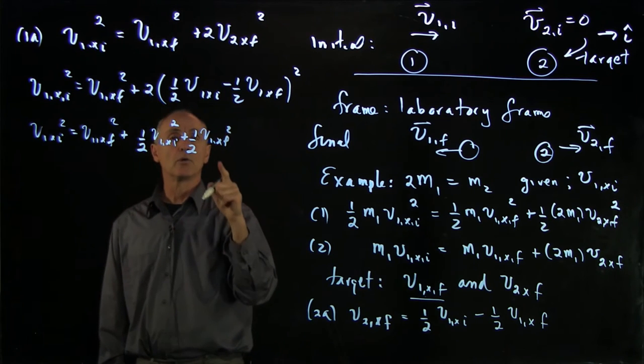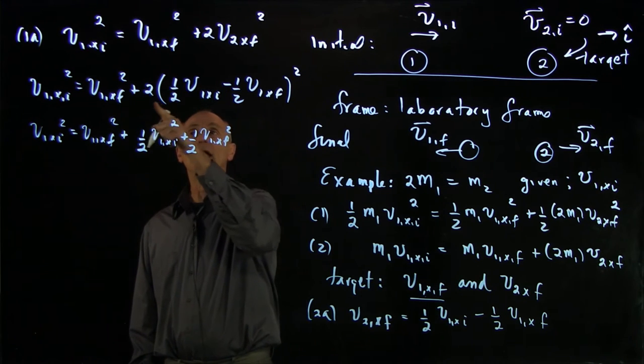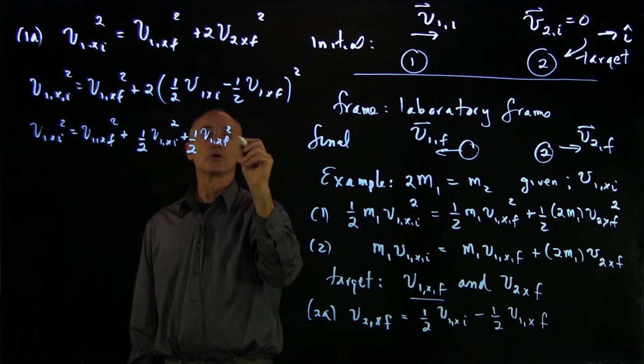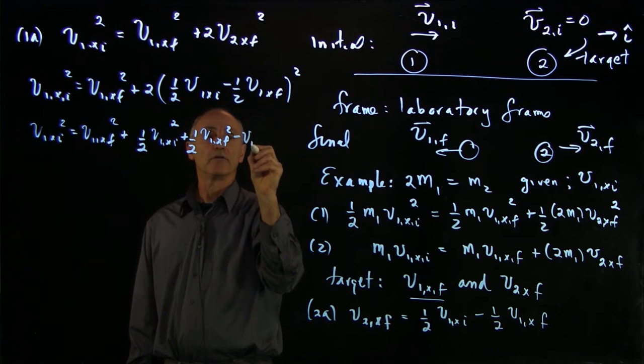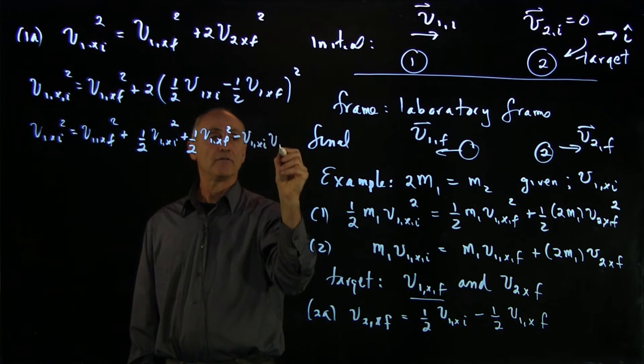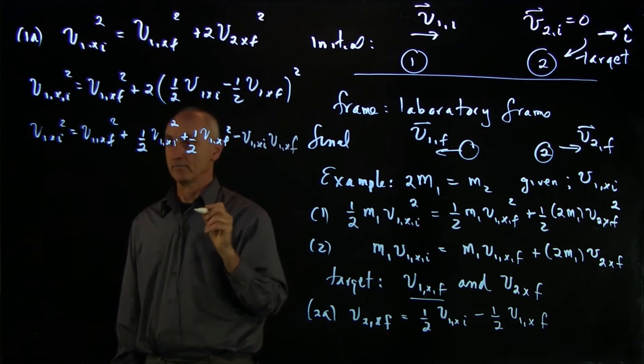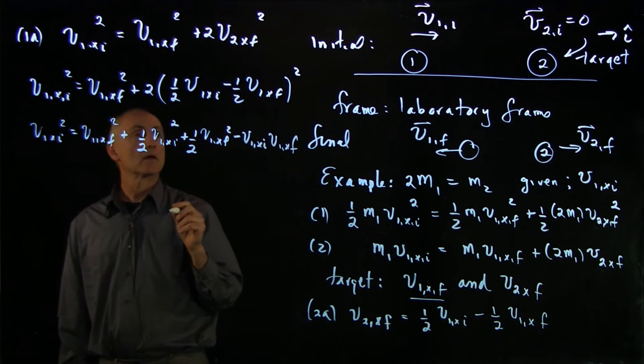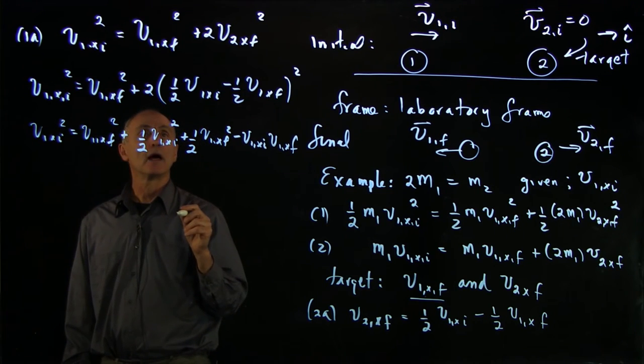Those represent the squaring out those two terms. The cross term will have a factor of 1/2 in the front but a factor of 2. So we have a simple cross term of v1x initial v1x final.